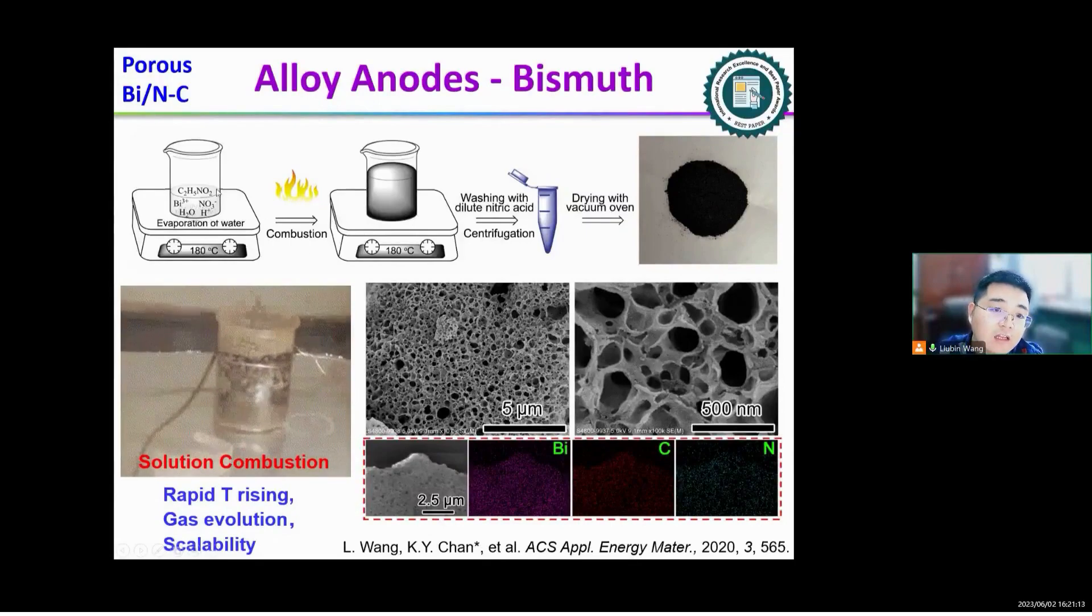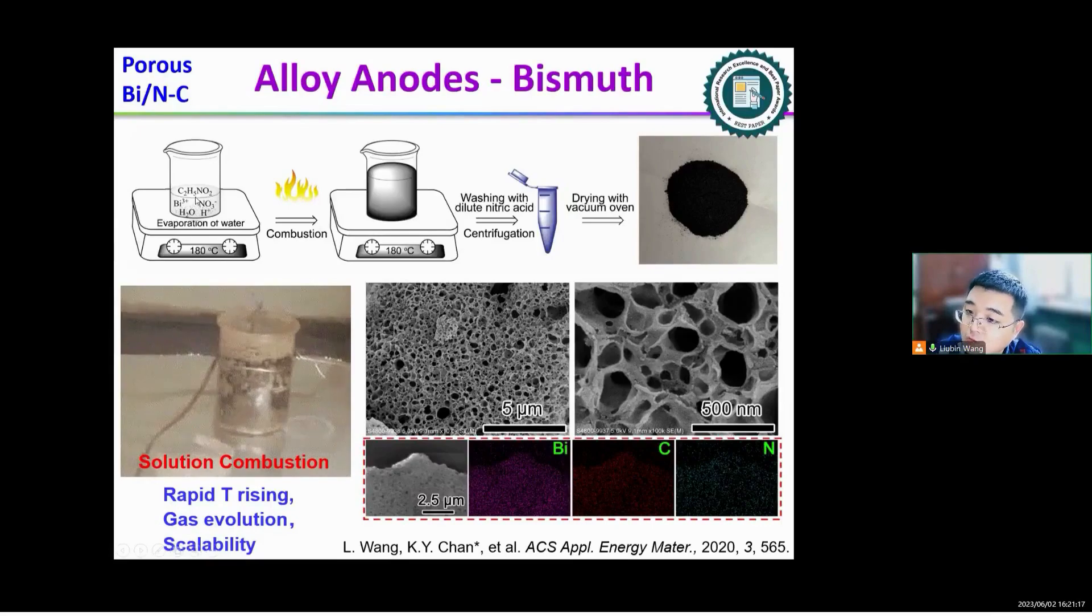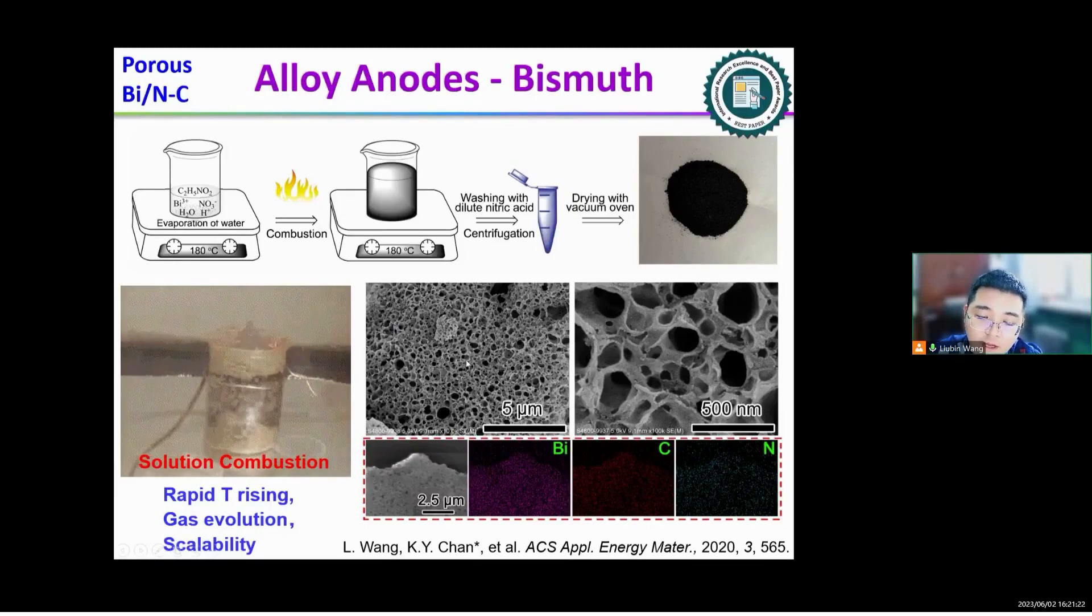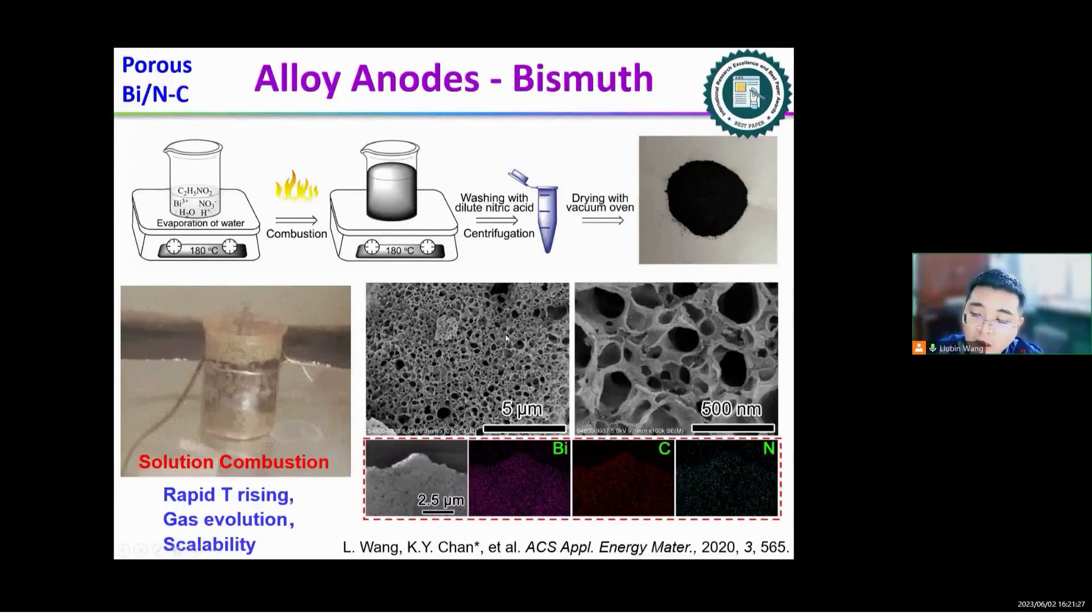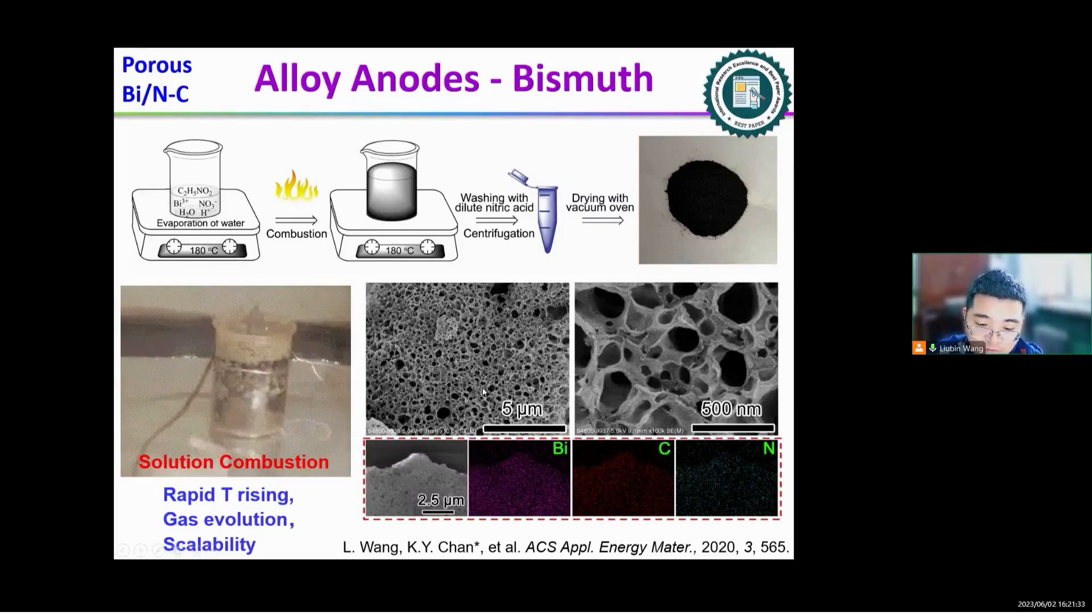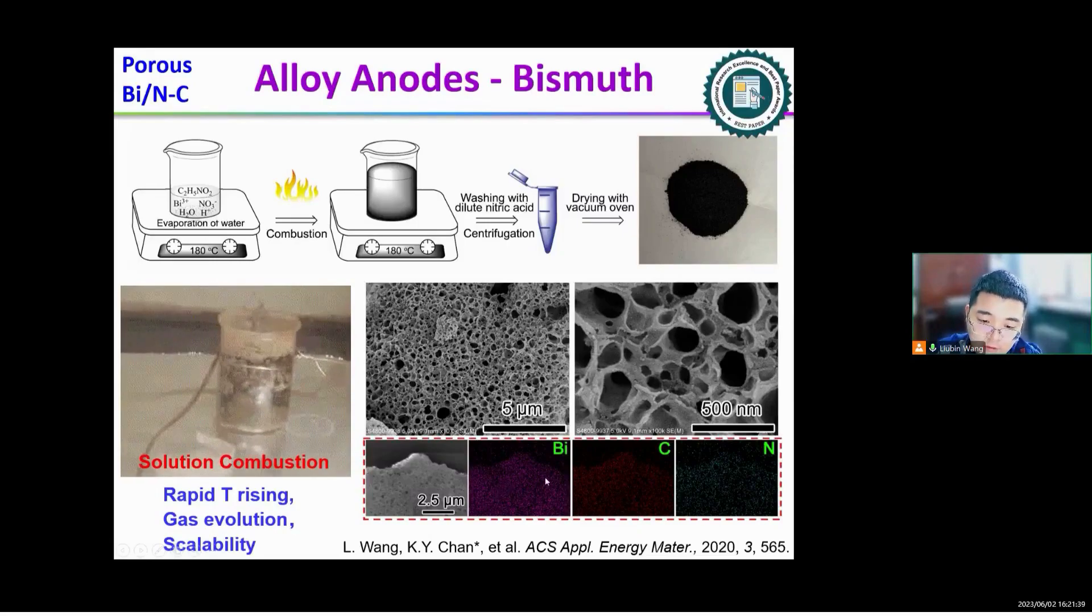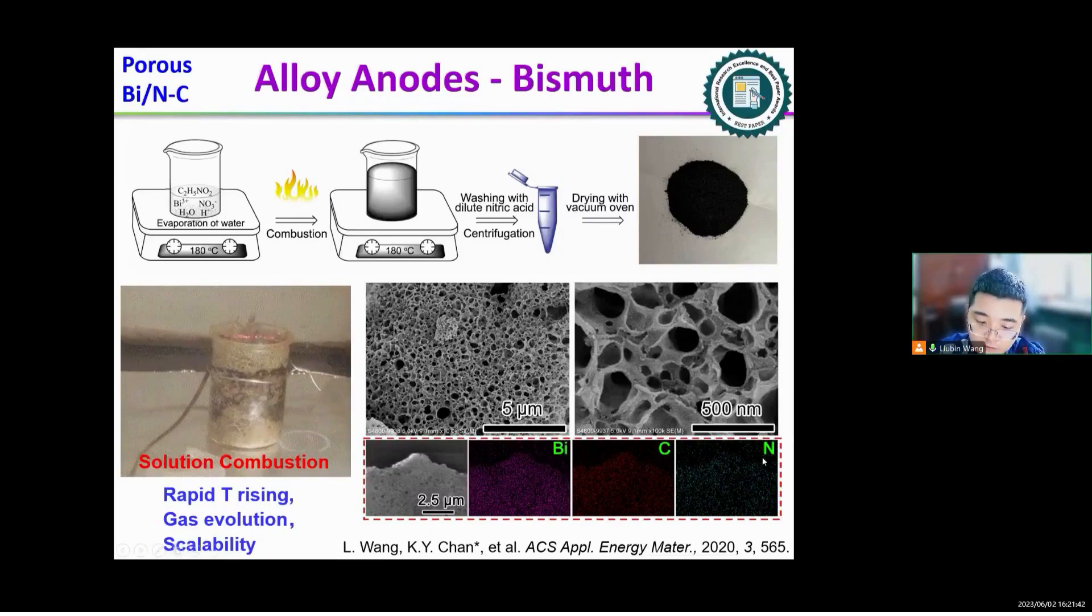From SEM images, we can find that there are many porous microparticle structures, which can benefit the infiltration of electrolyte. From the EDS mappings, we can prove the bismuth carbon nitrogen is uniform distribution.